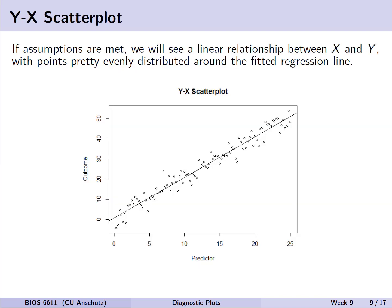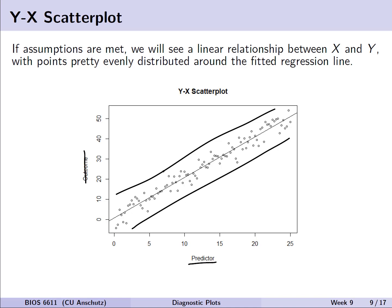So let's see what our assumptions look like when they're met with that y-x scatter plot. If they are met, we'll see a linear relationship between y and x, with the points pretty evenly distributed along that fitted regression line. And sure enough, we tend to see that it's pretty equally spread below and above, and it appears to actually have a linear relationship between the predictor x and the outcome on the y-axis.